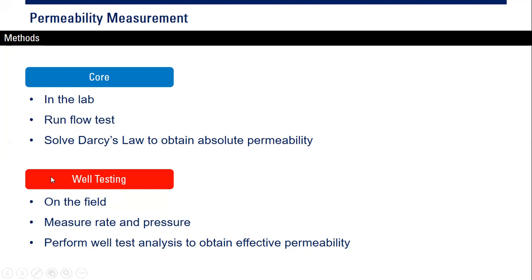This is permeability from the core, but from engineering point of view we can also get permeability from well testing. We do that on the field. We will measure the flow rate and the pressure, and then we will perform well test analysis or pressure transient analysis to obtain the effective permeability. From core we can get absolute permeability, but from well testing we can get effective permeability.